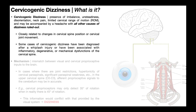Cervicogenic dizziness is the presence of imbalance, unsteadiness, disorientation, neck pain, limited cervical range of motion, and may be accompanied by a headache. The key here is all other causes of dizziness have been ruled out. This means that cervicogenic dizziness is a diagnosis of exclusion — you have to rule out or exclude other potential contributors to dizziness, like a central deficit, a peripheral hypofunction, or BPPV.